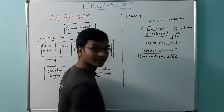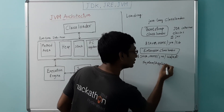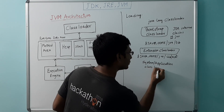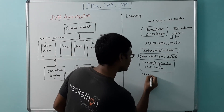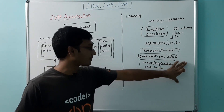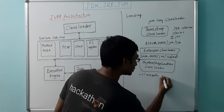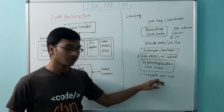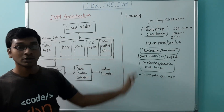Next comes the system class loader, also called the application class loader. This class loader is responsible for loading the class files of our application. It loads the class files present in the CLASSPATH environment variable, which represents the location of class files that are part of our Java application. This is also represented with the -cp command-line option. Whatever files are found in this environment variable will be loaded by the application class loader, which is the child of the extension class loader. This is all about the loading phase.